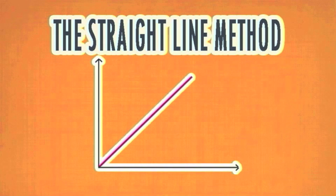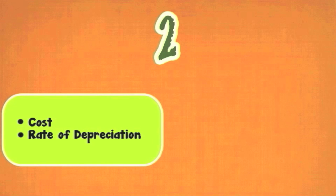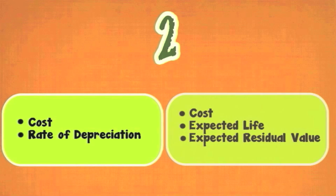But how do we calculate depreciation? A common and simple method used is called the straight line method. There are two ways to calculate straight line depreciation and each is dependent on the information you are provided with. The first method is when you have the cost of the item and the rate of depreciation. And the second is when you know the cost of the items, the expected life of the item and the item's value after its useful life.